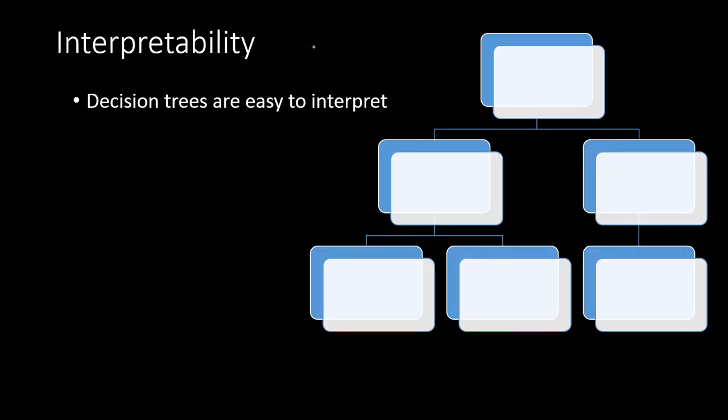Decision tree is very easy to interpret. You have a tree like this. You can explain to non-technical audience very well that look, this is my tree and this is the way the data is classified into.